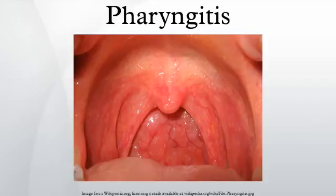Adenovirus is the most common of the viral causes. Typically the degree of neck lymph node enlargement is modest and the throat often does not appear red, although it is very painful. The Orthomyxoviridae, which cause influenza, present with rapid onset, high temperature, headache, and generalized ache. A sore throat may be associated.